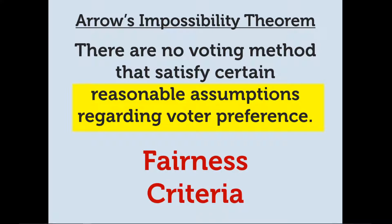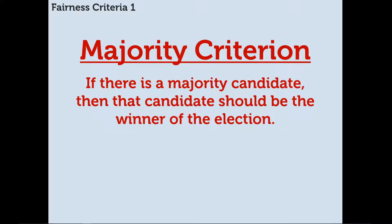We're going to call these reasonable assumptions the fairness criteria and we're going to talk about four of them. The first fairness criterion is the majority criterion, which states that if there is a majority candidate then that candidate should be the winner of the election. It simply says that if a candidate wins more than half of the votes, that candidate should be the winner. But we'll see examples where under certain voting methods a majority candidate didn't win the election.